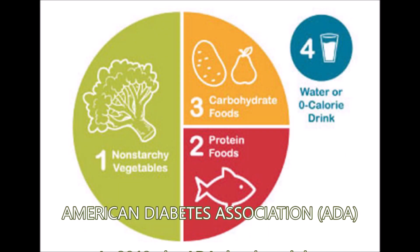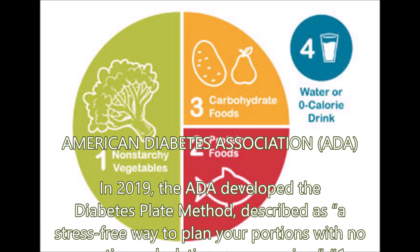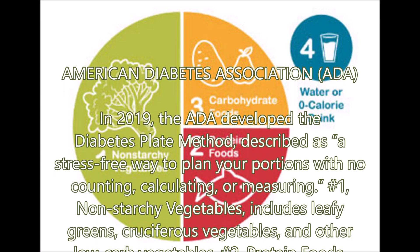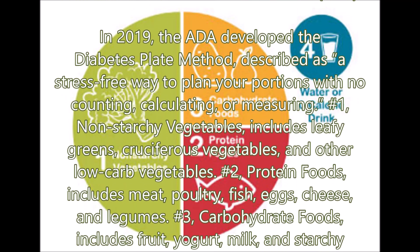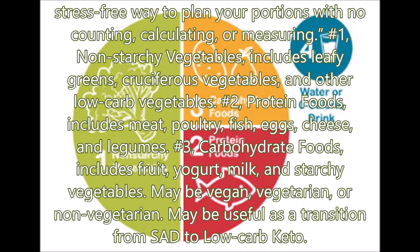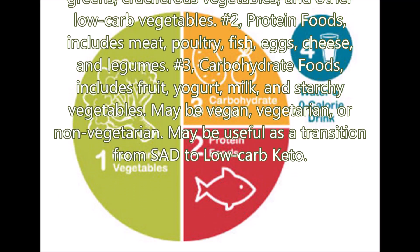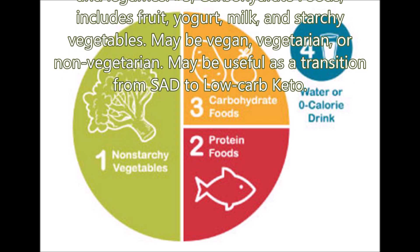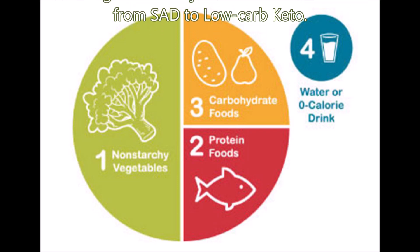American Diabetes Association (ADA): In 2019, the ADA developed the Diabetes Plate Method, described as a stress-free way to plan your portions with no counting, calculating, or measuring. It includes: (1) non-starchy vegetables — leafy greens, cruciferous vegetables, and other low-carb vegetables; (2) protein foods — meat, poultry, fish, eggs, cheese, and legumes; (3) carbohydrate foods — fruit, yogurt, milk, and starchy vegetables. May be vegan, vegetarian, or non-vegetarian. May be useful as a transition from SAD to low-carb keto.